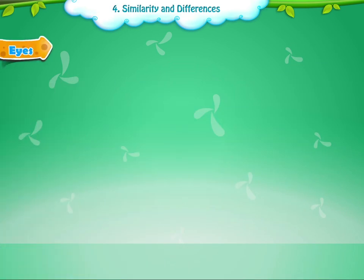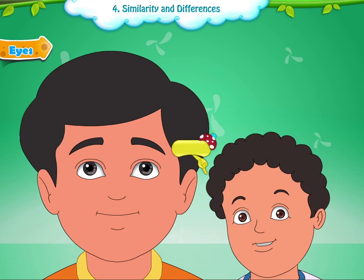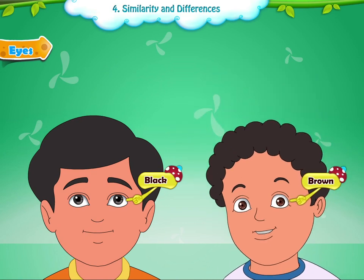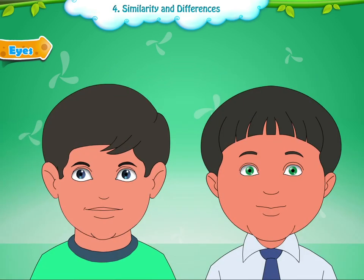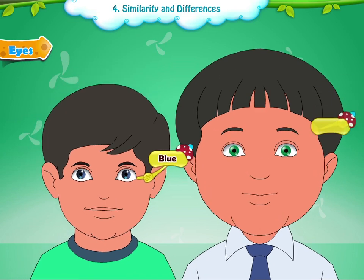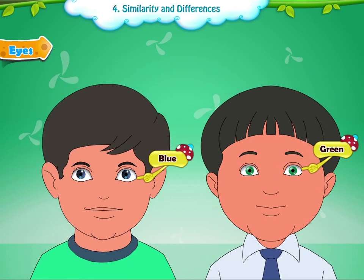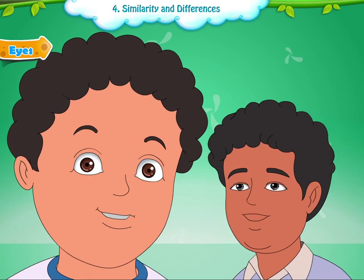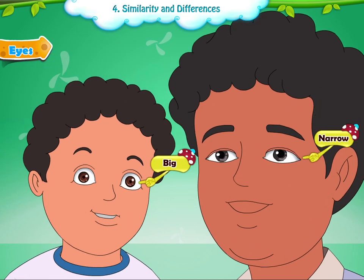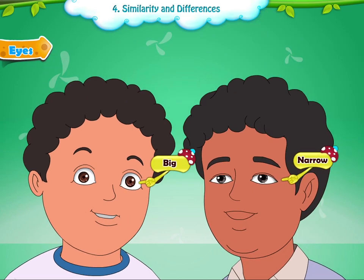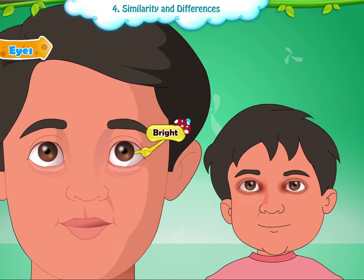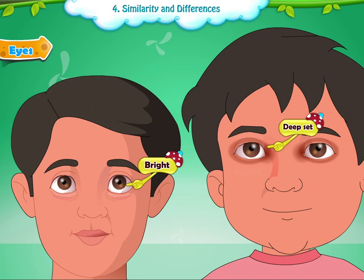Eyes. Many of us have black eyes, while others may have brown eyes. Some people may have blue eyes and some have green eyes. Some people have big eyes and some have narrow eyes. Some people have bright eyes, while some have deep set eyes.